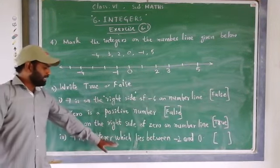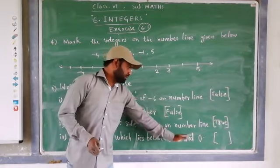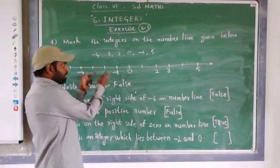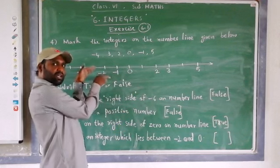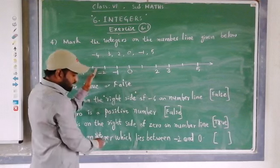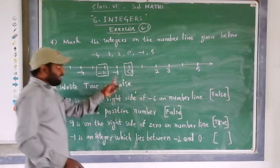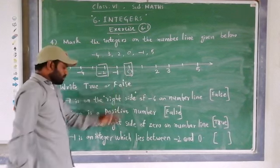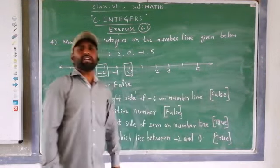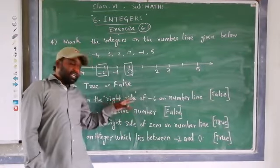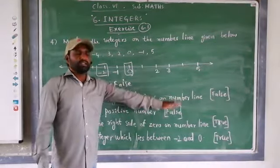Next: minus 1 is an integer which lies between minus 2 and 0. Looking at the number line, minus 2 is here and 0 is here — minus 1 is in the middle of these two integers. So this statement is true. Remember the key words: right side, left side, in between, positive, negative — these are the important things needed to answer true or false statements.